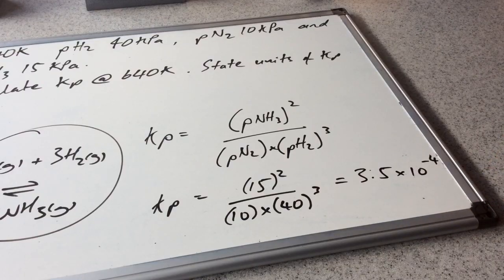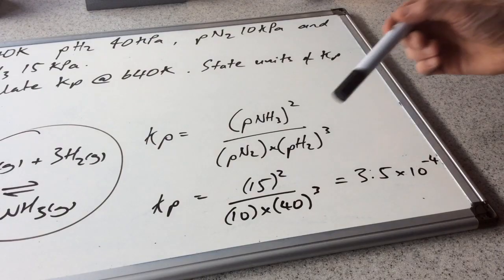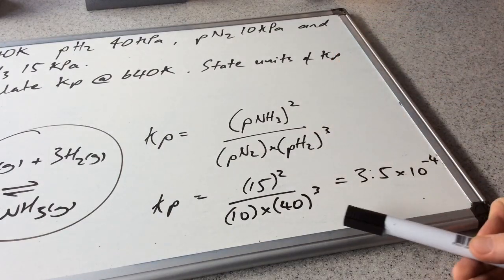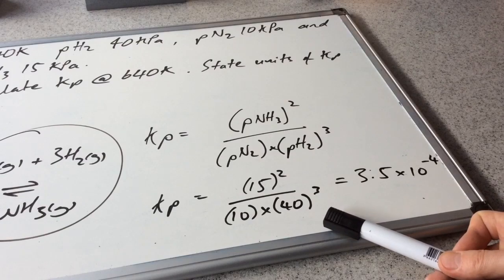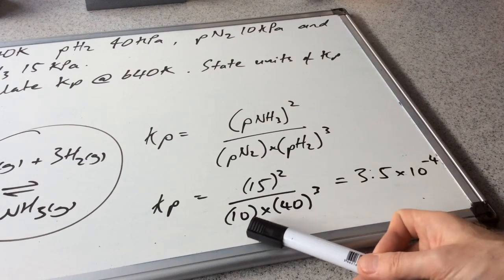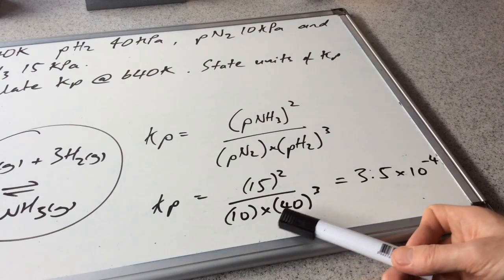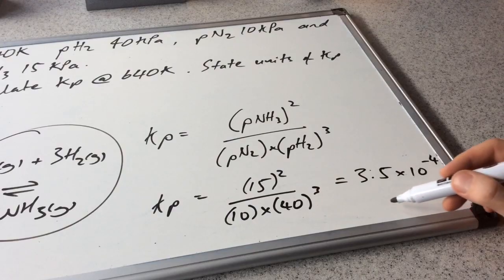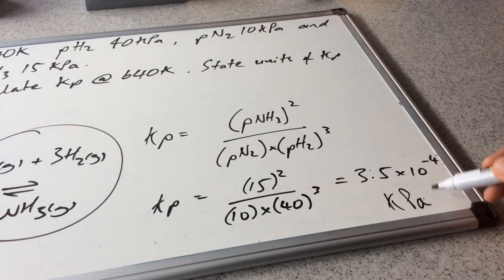For the units: the partial pressures are all measured in kilopascals, so we have kilopascals squared on the top divided by kilopascals to the power of 4 on the bottom — that's kilopascals times kilopascals cubed. Effectively we've got 1 over kilopascals squared, so the units are kilopascals to the negative 2, or kPa⁻².